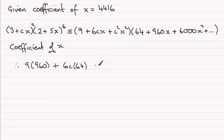Now we know that is equal to 4,416. So it's just a question of solving this equation. If we multiply this out, 9 times 960, you're going to get 8,640. Next term, 6c times 64 gives us 384c and that's going to be equal to 4,416.